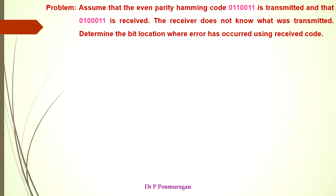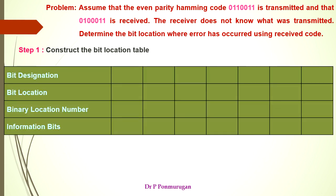The received code is 01001111. The first step in the error detection and correction process using Hamming code is to construct the bit location table. Since we have 7 bits, which comprise 3 parity bits and 4 information bits, the bit designation can be stated accordingly.